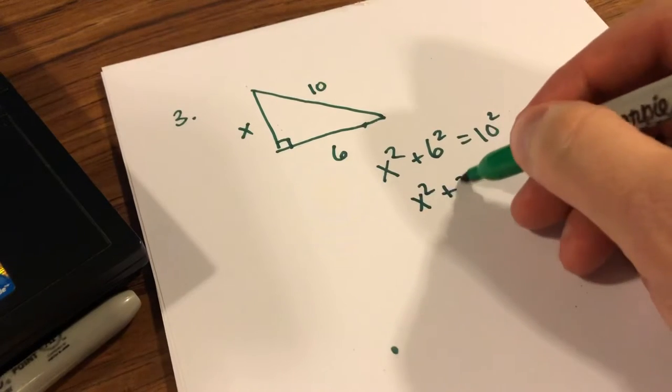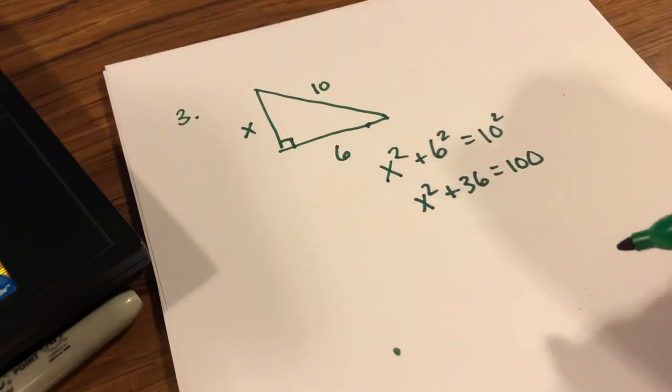If I simplify that, that's x squared plus 36 equals 100.